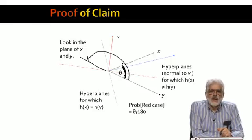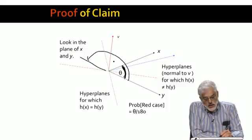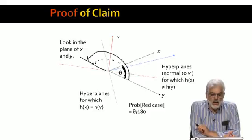Okay, that is, the red case is when h says no, so the probability of saying yes, which is any hyperplane in this area, is 1 minus theta divided by 180.